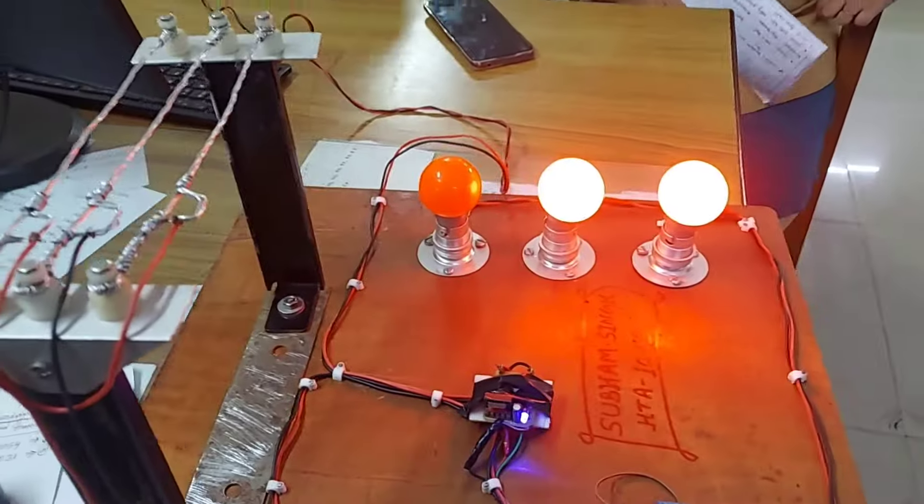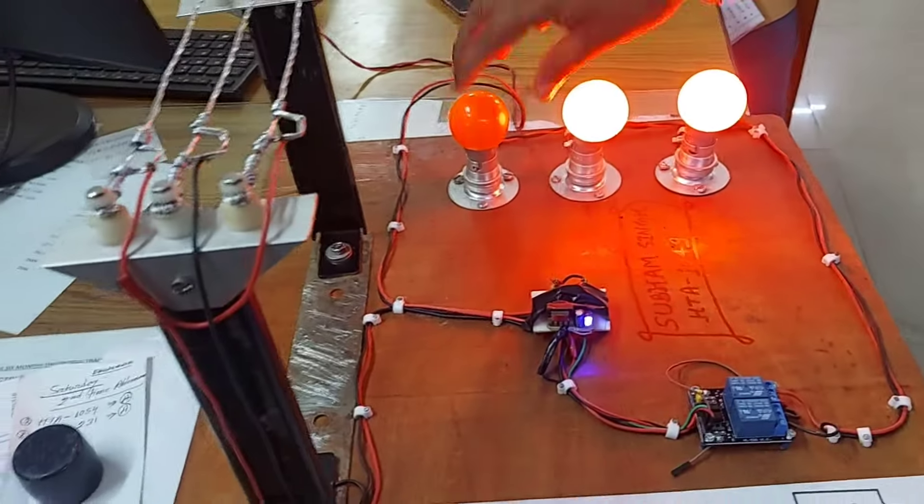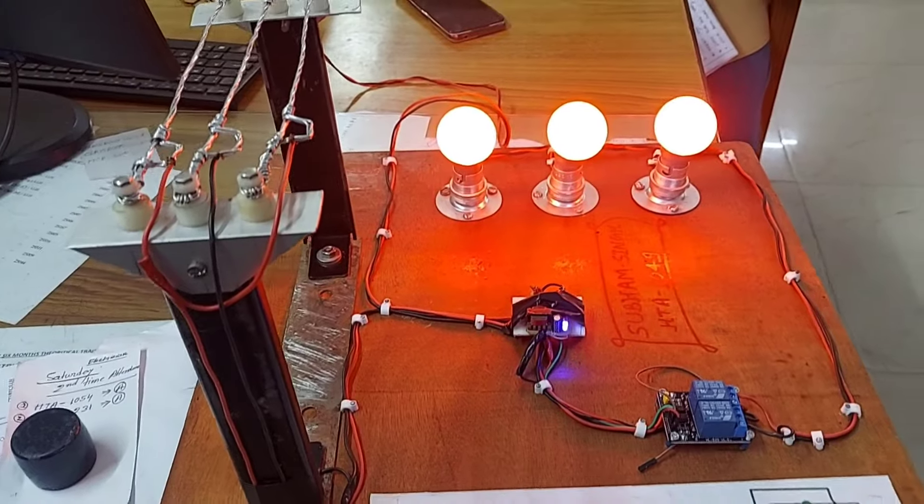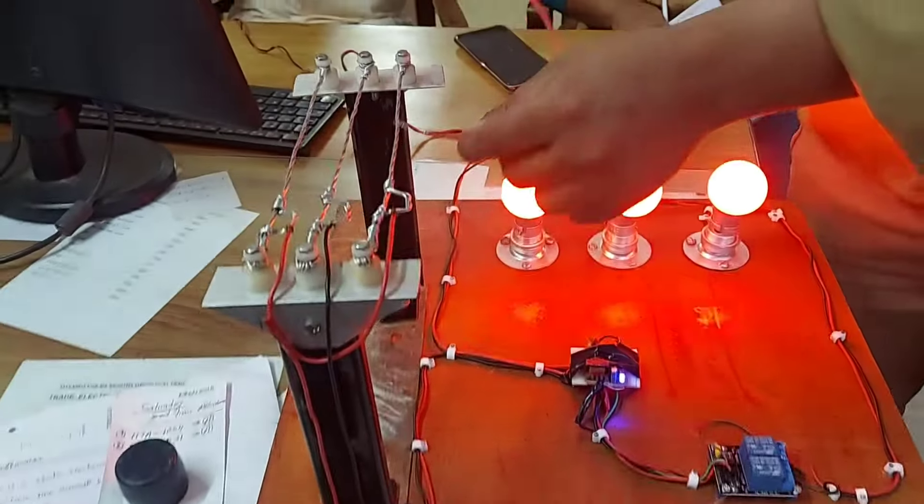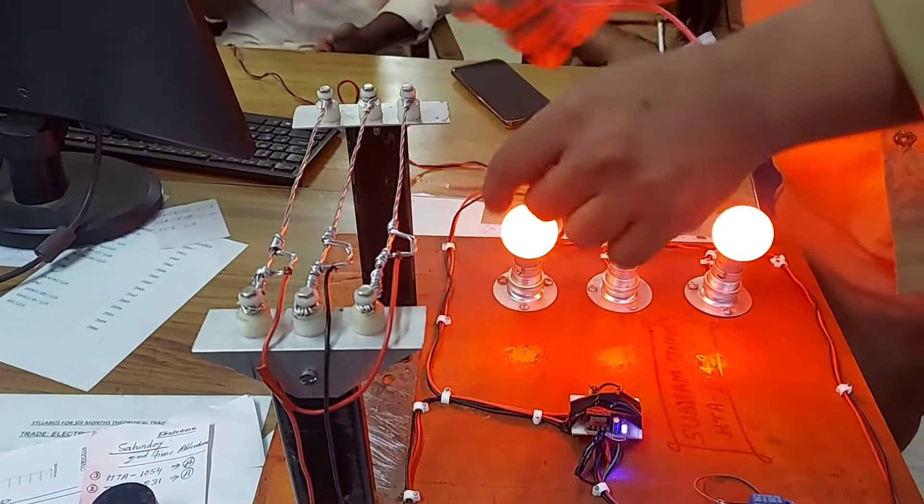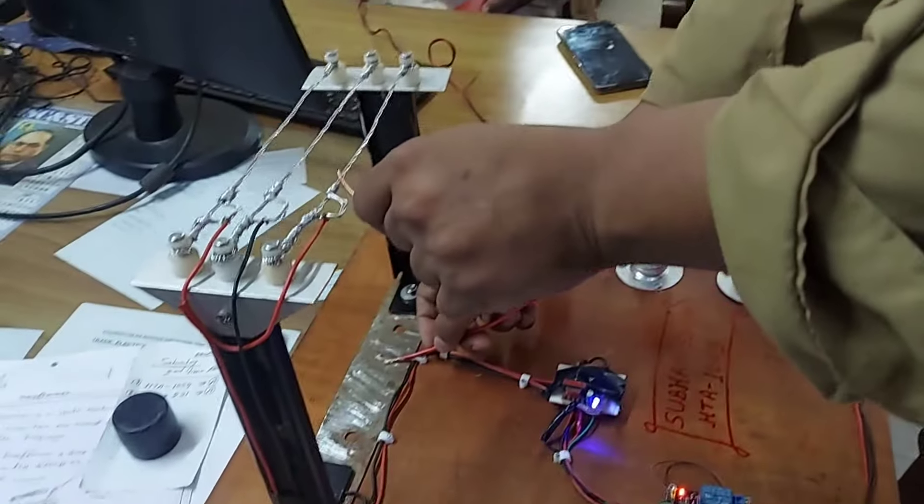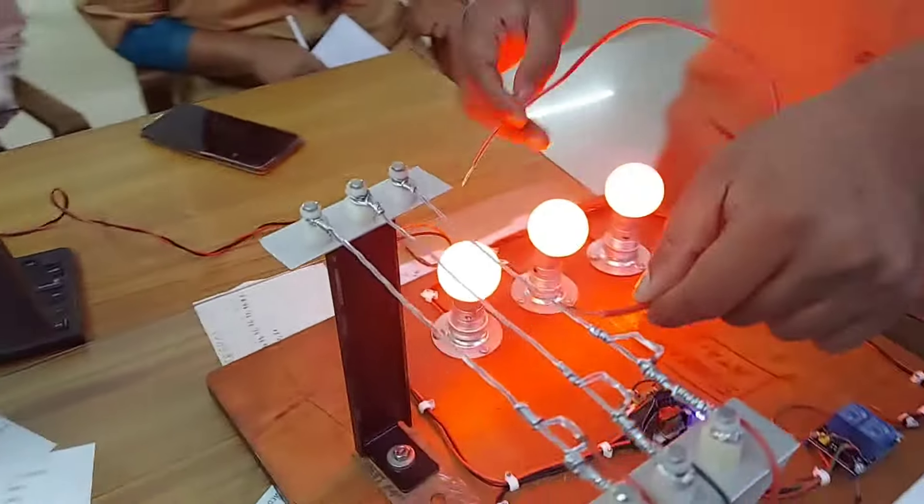Whenever there is a line-to-line fault, the indicating lamps stop glowing. Similarly, in case of line-to-earth fault, the indicating lamps again stop glowing.